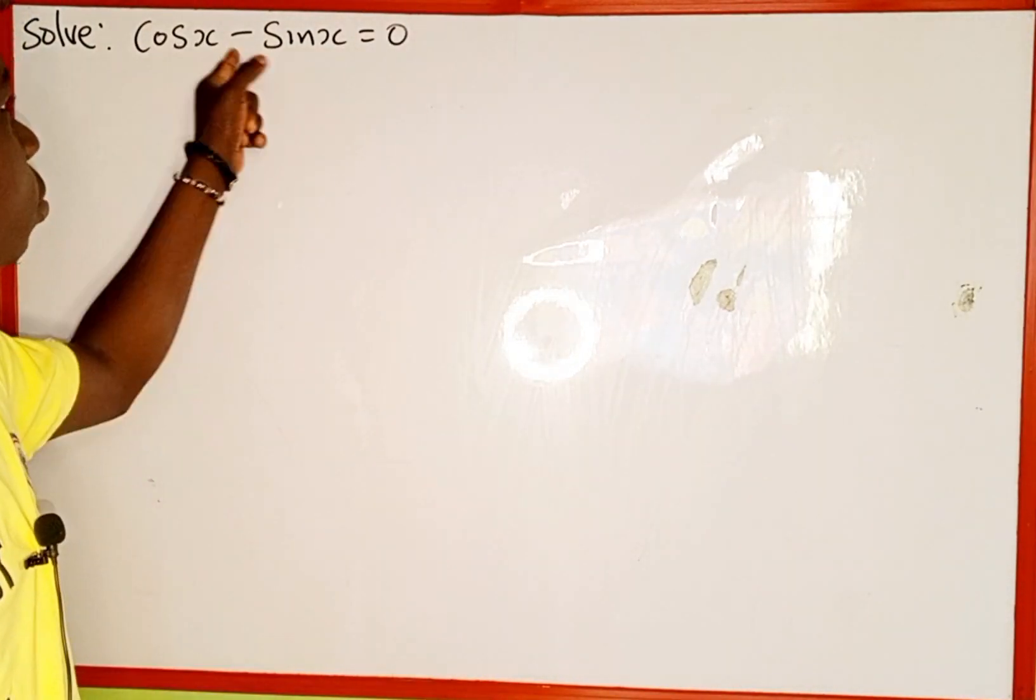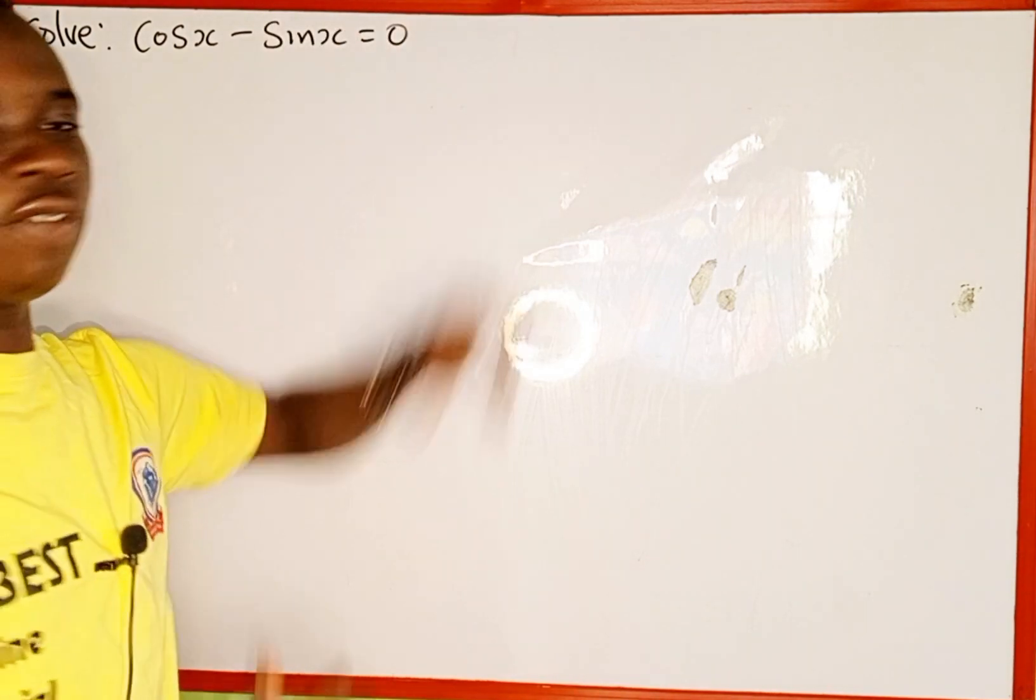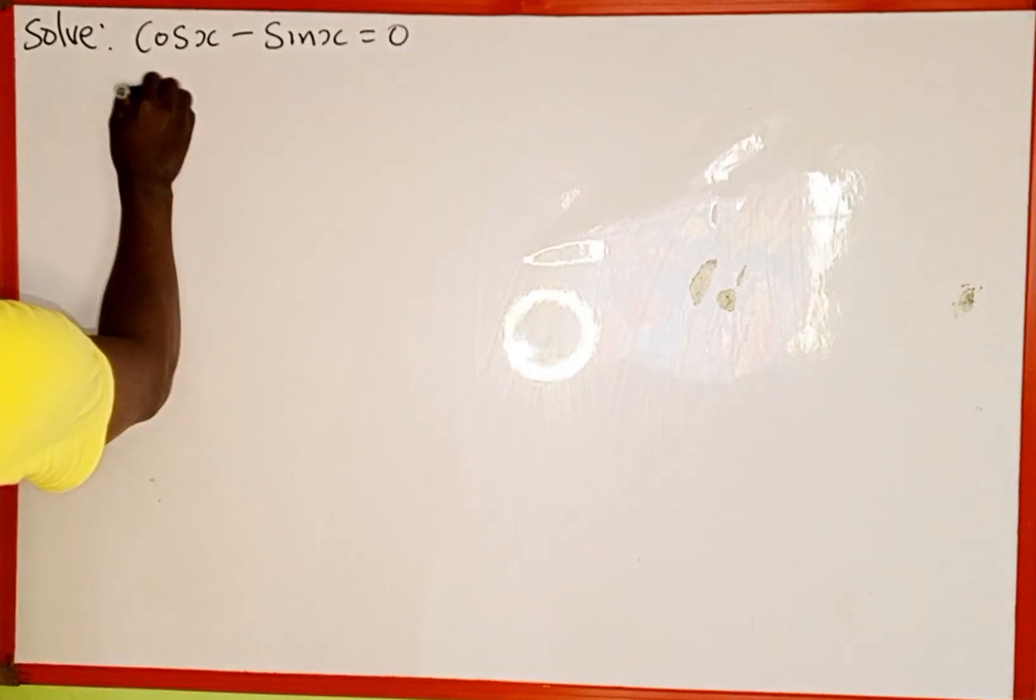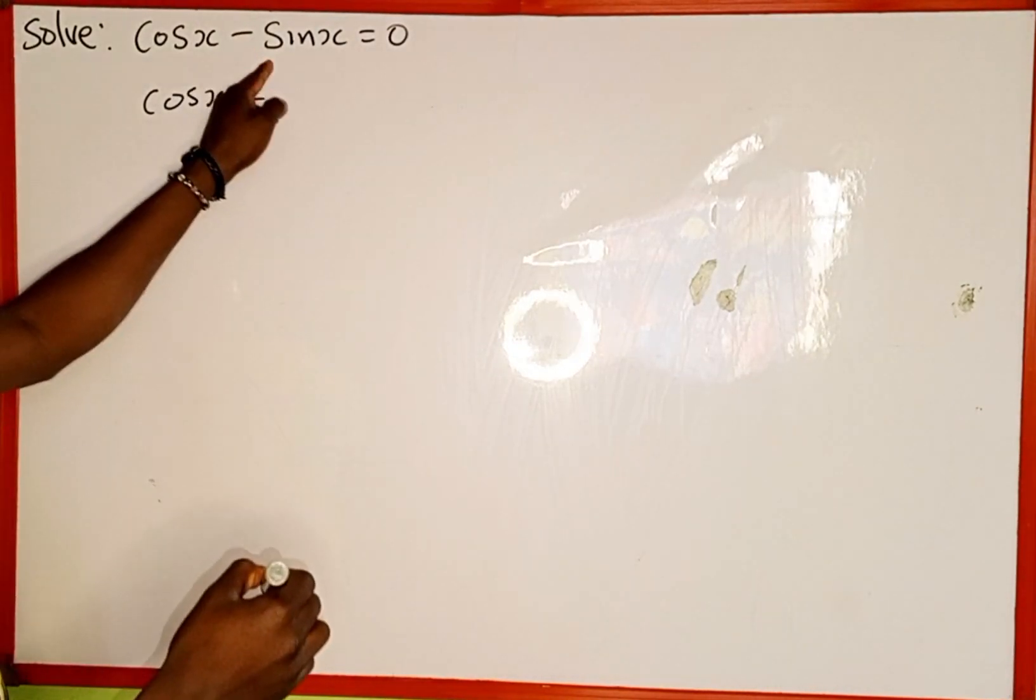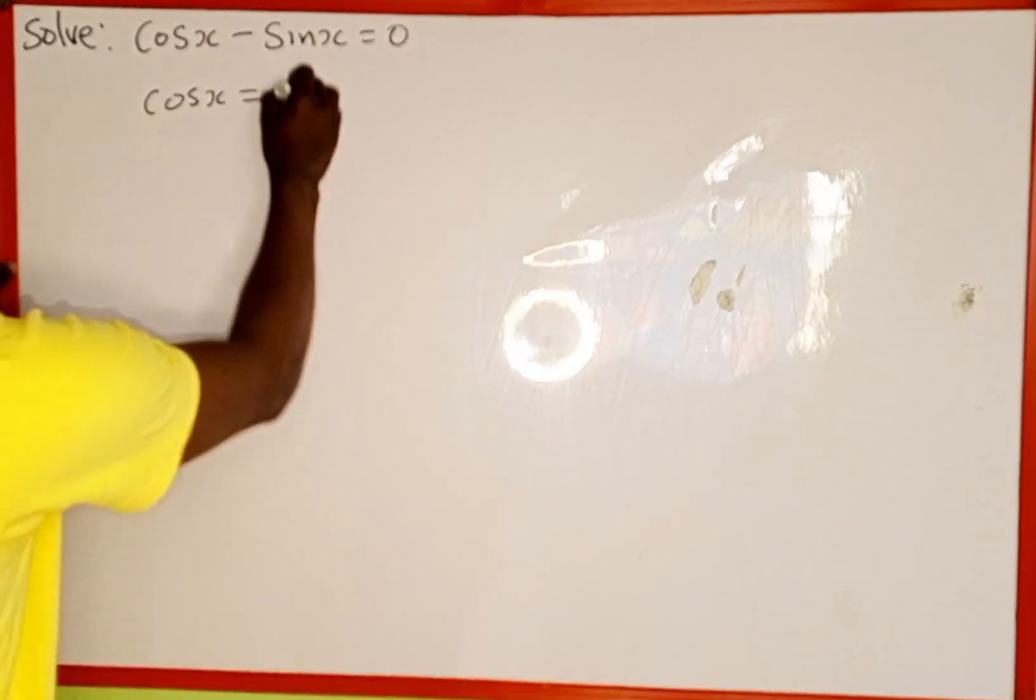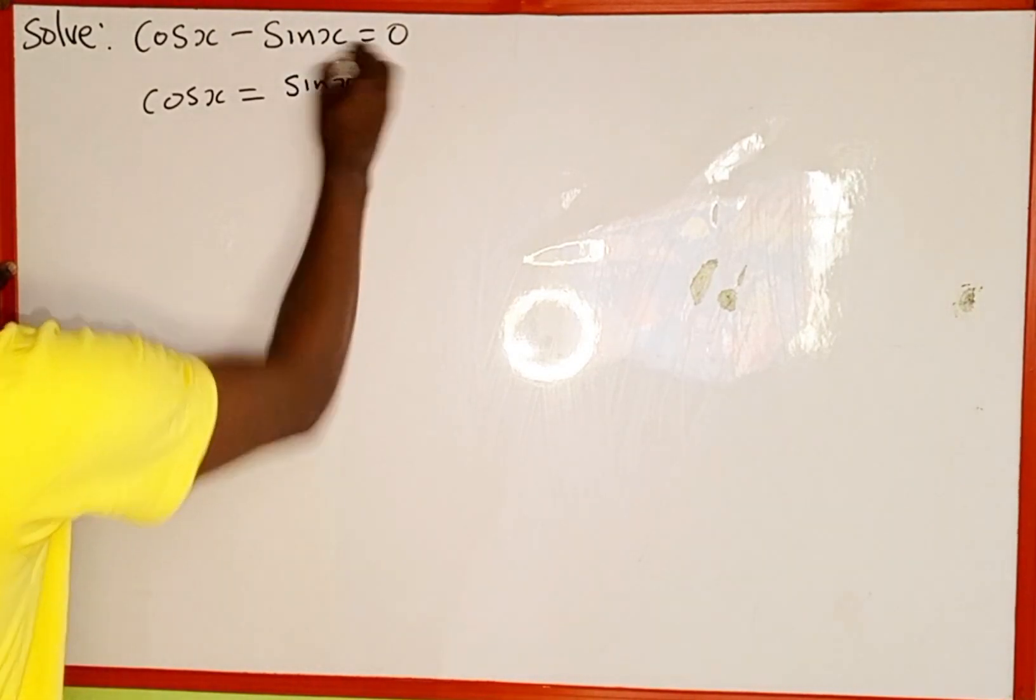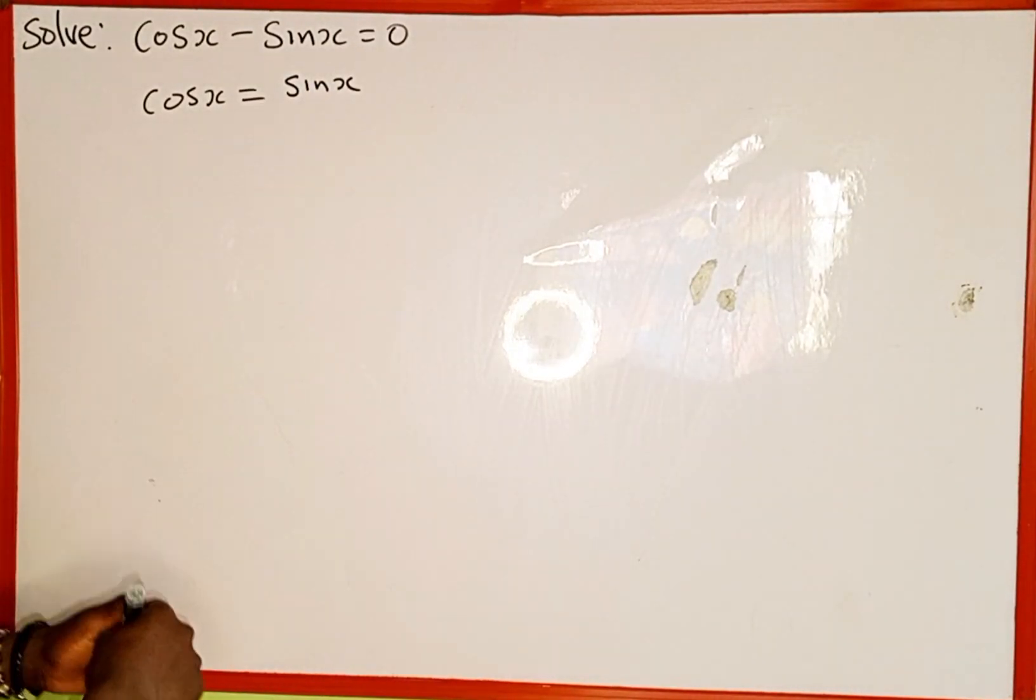The first thing we are going to do is to take this negative sin x to the right hand side of this equation. We are going to have cos x, which is going to be equal to, when negative crosses the equality sign, it is going to change to positive sin x.